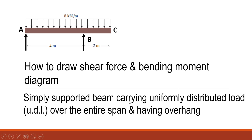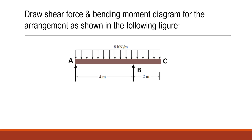In this video, we'll try to understand how to draw the shear force diagram and bending moment diagram in case of a simply supported beam carrying uniformly distributed load over the entire span length and having an overhang on the right hand side. The beam is of 6 meter length with an overhang of 2 meter on the right hand side, and a uniformly distributed load of 8 kN per meter is acting over the entire 6 meter span.